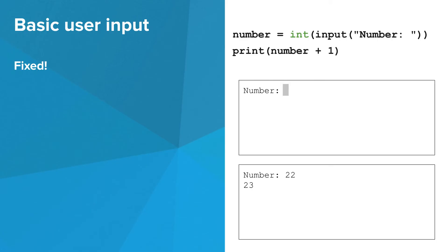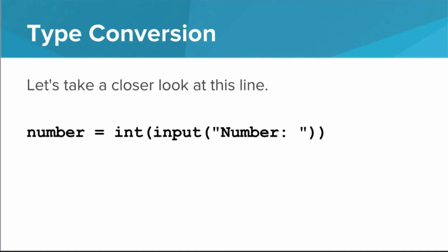Fortunately, Python provides a handy function called int that converts a string into an integer, as long as the original string really contains a number. Let's take a closer look at this line. There's a lot going on here, and it's easy to get overwhelmed by the parentheses. The key is to evaluate from the inside out.